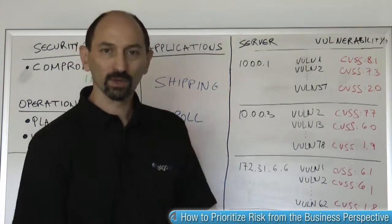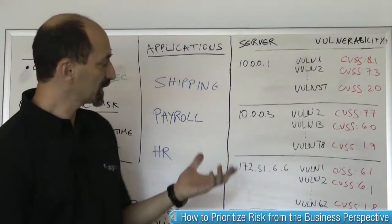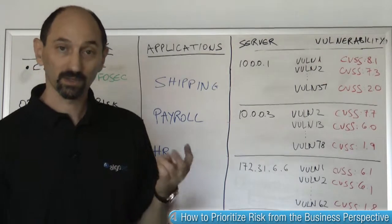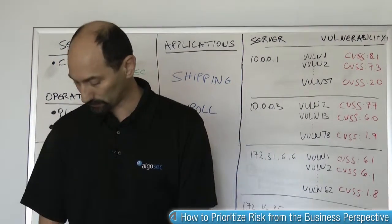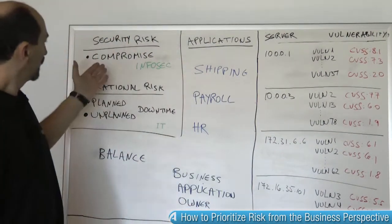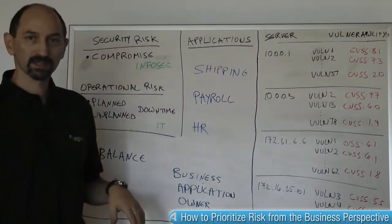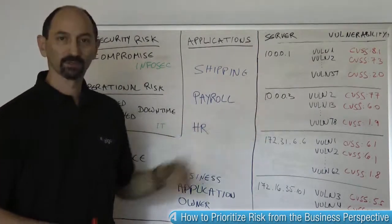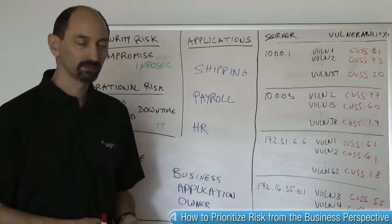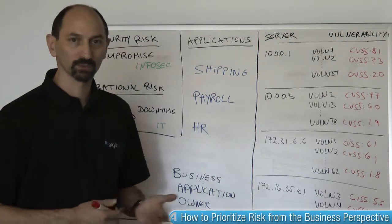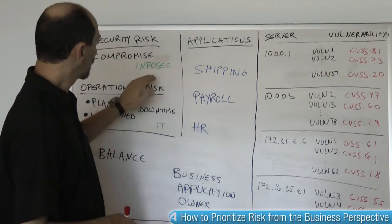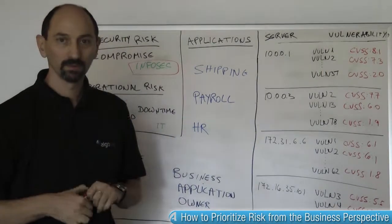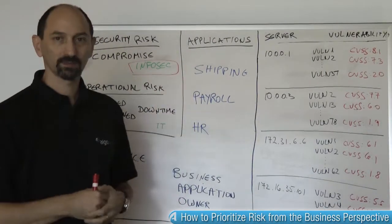Now, what are you going to do with this information? What does it really mean? It really means risk. There are actually two types of risk that you need to think about. The first type is the security risk — the risk of compromise. What could happen if one of these vulnerabilities is exploited? What sort of damage could be caused, what information would be lost? Assessing this type of risk is usually the domain of the information security team, who look at these risks and can prioritize them.